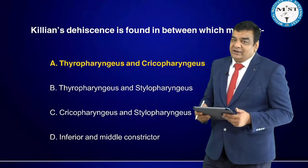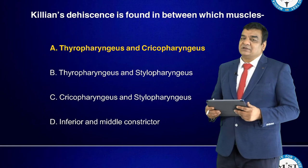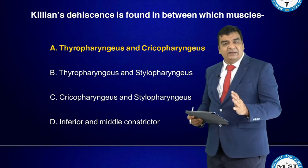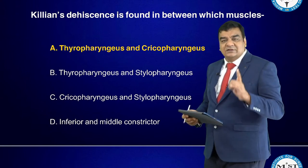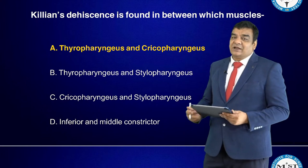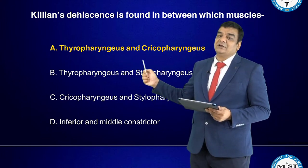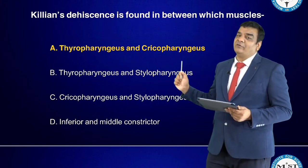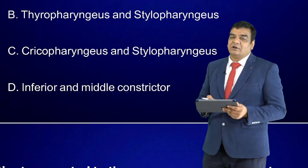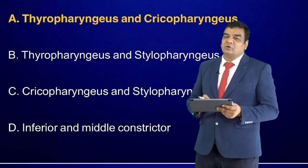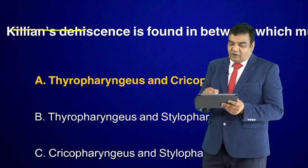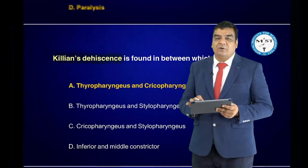Killian's dehiscence is found between which muscles? This question has been repeated many times. In 2019 they asked through which muscle (inferior constrictor); this time they asked between which two muscles — thyropharyngeus and cricopharyngeus. Not thyro and stylopharyngeus, not crico and stylopharyngeus, not inferior and middle constrictor. The answer is thyropharyngeus and cricopharyngeus for Killian's dehiscence.